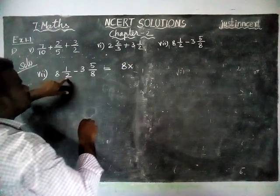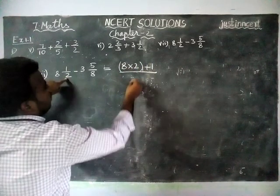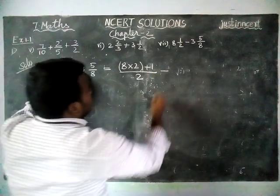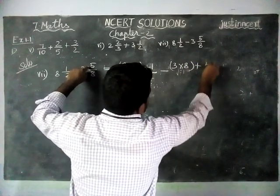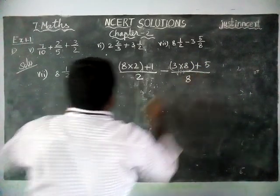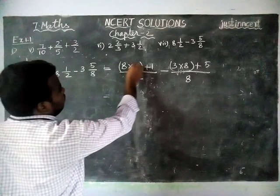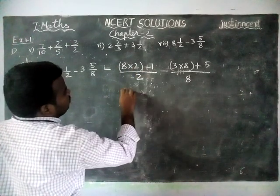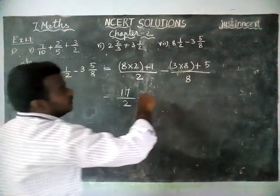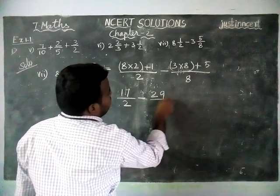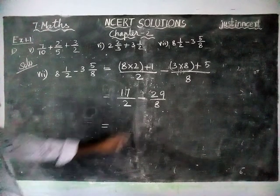For the next part, we convert: whole part times denominator plus numerator, divided by denominator. So 2 and 1/8 becomes (8 × 2 + 1) / 8, and 3 and 5/8 becomes (8 × 3 + 5) / 8. Now we find the final answer: 8 twos are 16, plus 1 equals 17/2. And 8 threes are 24, plus 5 equals 29/8.